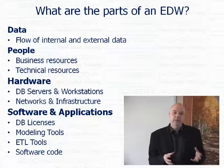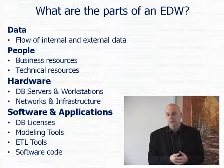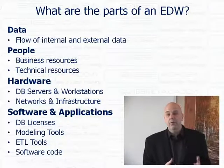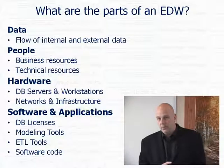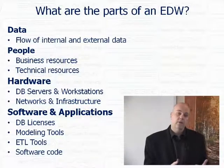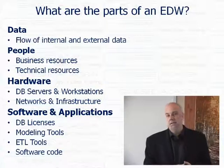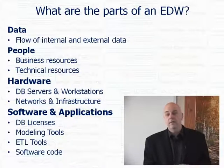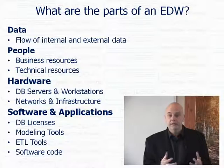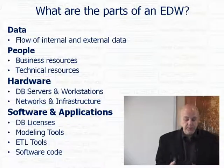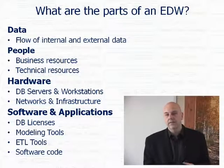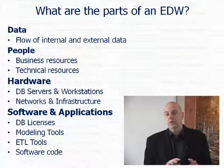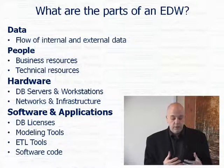What are the parts of a warehouse? What does it include? Well, it includes data from all these different sources, including external sources. We have people — both business people that understand what the business does and what the data means, and technical resources that put this all together, integrate it, and find a way to deliver it. We have hardware: database servers that store the warehouse itself, workstations to work with it, networks and infrastructure to support movement of data and uptime and access. We also have software and applications: database licenses, software licenses, modeling tools, ETL transformation tools like Informatica, and software code that we write or purchase.